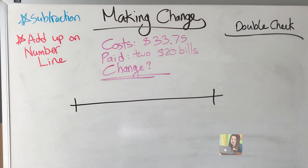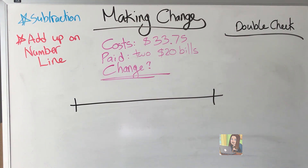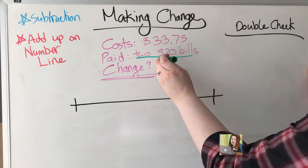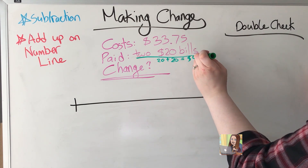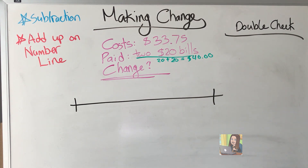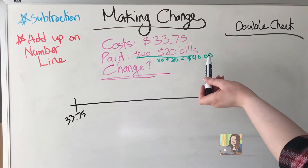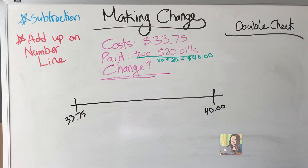Our second example: the item costs thirty-three dollars and seventy-five cents, and I paid with two twenty-dollar bills. First, let's figure out how much I paid in total — twenty plus twenty gives me forty dollars. Now I know how much I paid. I'll plot the numbers on the number line: thirty-three dollars and seventy-five cents on the lower end, and forty dollars is what I need to add up to.